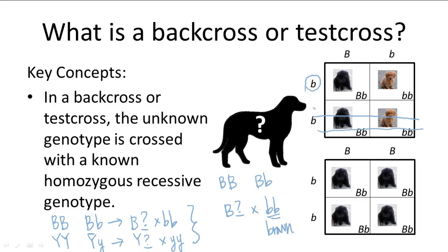And the more offspring the dog produces that are black, the stronger your conclusion, the less it's able to be attributed to chance.